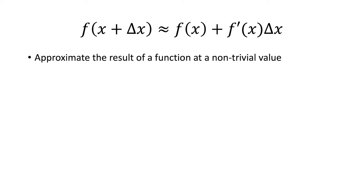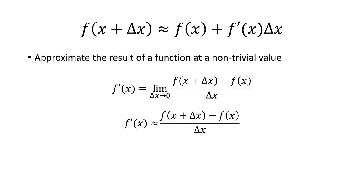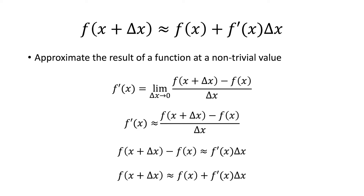Let's look at the derivation of this equation — it's pretty straightforward. We start with the definition of the derivative: f'(x) = lim(Δx→0) of [f(x + Δx) − f(x)] / Δx. If we assume Δx is a very small number, we can drop the limit and say f'(x) ≈ [f(x + Δx) − f(x)] / Δx. Then we multiply both sides by Δx and rearrange to get our differential equation.